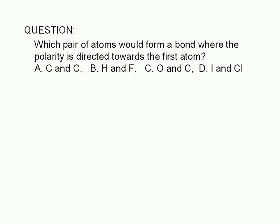Which pair of atoms would form a bond where the polarity is directed towards the first atom? A. Carbon and carbon, B. Hydrogen and fluorine, C. Oxygen and carbon, D. Iodine and chlorine.